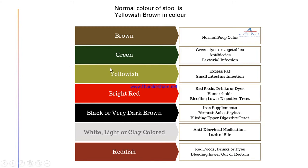The normal stool color is yellowish-brown. Green stool means the patient has taken green dyes, vegetables, or antibiotics, or there may be bacterial infection. Yellowish color indicates excessive fat or small intestine infection. Bright red stool indicates the patient has consumed red-colored foods, drinks, or dyes, or the patient has hemorrhoids or bleeding in the lower digestive tract.